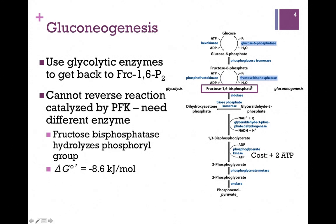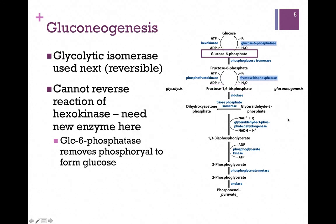Here we have our product, fructose-6-phosphate. The next step is reversible — that's our isomerization reaction to form glucose-6-phosphate. We get down to the last step of gluconeogenesis, which correlates to the first step in glycolysis. Remember, that also is an irreversible step, so we can't use hexokinase in this step. Instead, we have a different enzyme, glucose-6-phosphatase, which clips off that last phosphate, and there we have glucose.